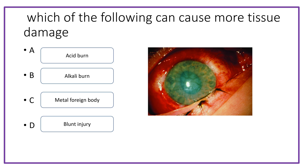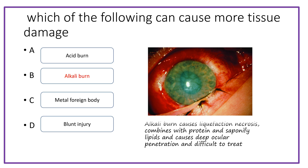Which of the following can cause more tissue damage? Acid burn, alkali burn, metal foreign body, or blunt injury. The answer is alkali burn, because alkali burn can cause liquefaction necrosis — as proteins and lipids combine, the alkali can penetrate deep inside the ocular tissue and cause greater damage compared to acid burn.